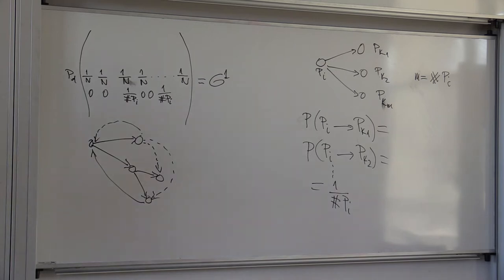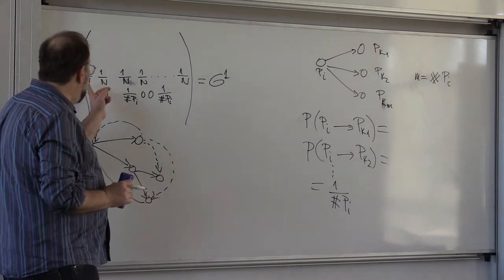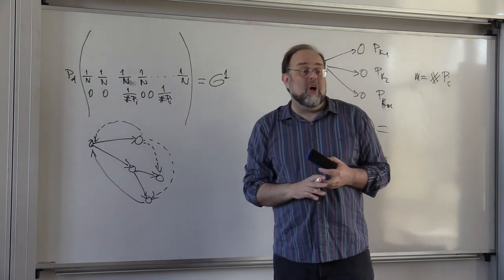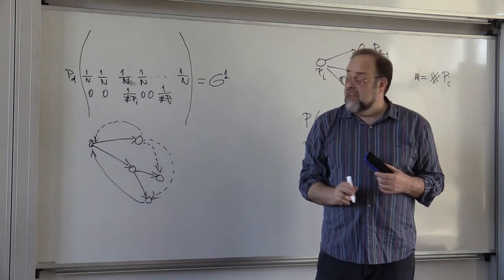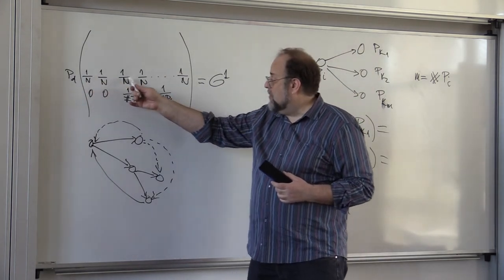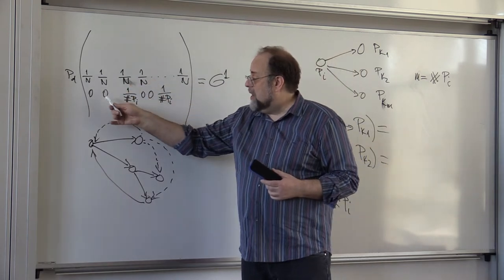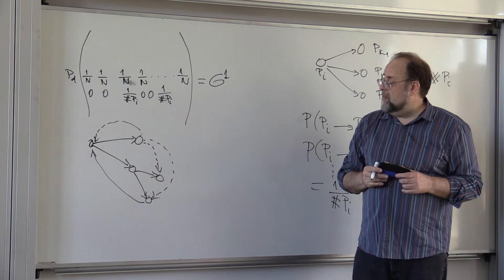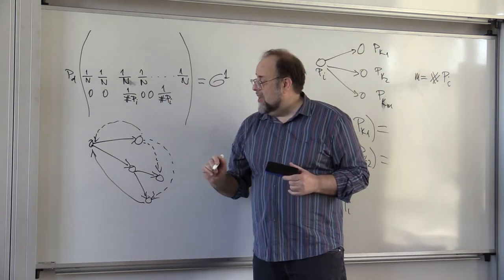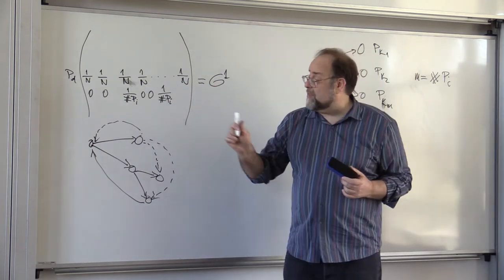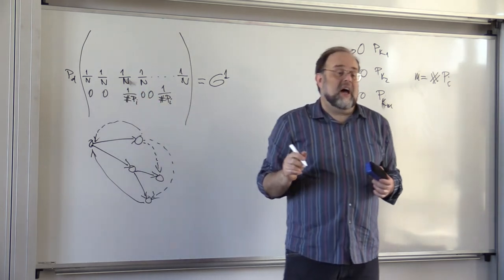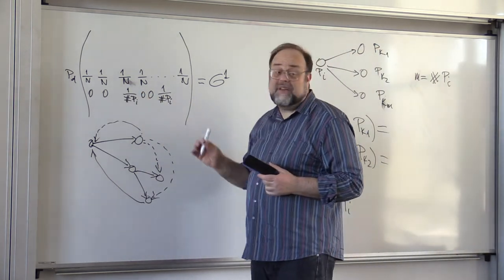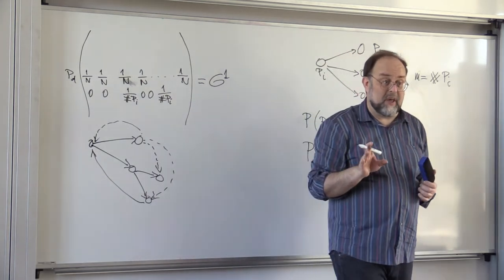Unfortunately, as you can see, this matrix G1 is no longer as sparse, because a whole bunch of zeros has been replaced by 1 over N. But we will see that despite this, multiplication of a vector with this matrix can be done in a very fast way.